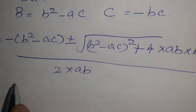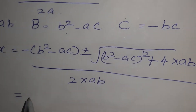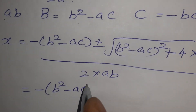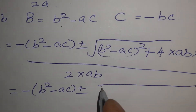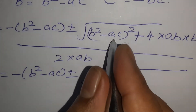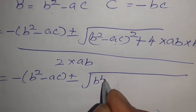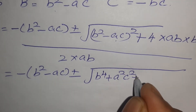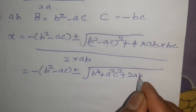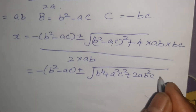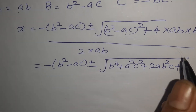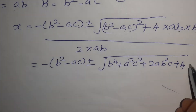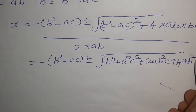Now that is equal to: −(B² − AC) ± √(B⁴ + A²C² + 2AB²C + 4AB²C), all divided by 2AB.